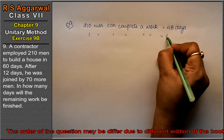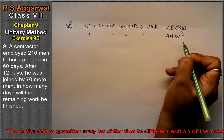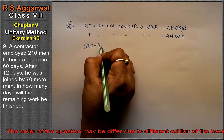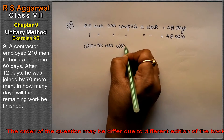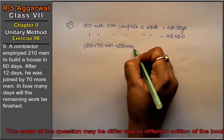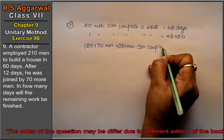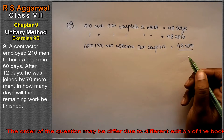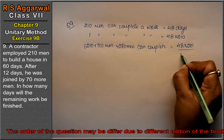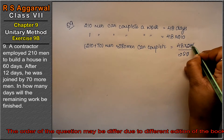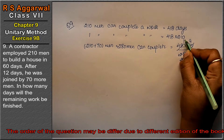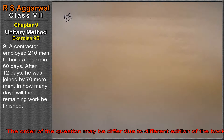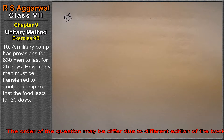One man can complete the work in 48 into 210 days. Now 70 more men are added, so 210 plus 70 equals 280 men. So 280 men can complete the work in 48 into 210 divided by 280 days. Calculating: 7 threes are 21, 7 fours are 28, that means 36 days is the answer.